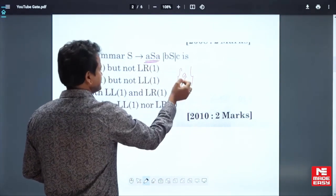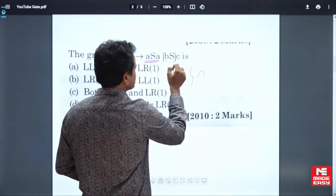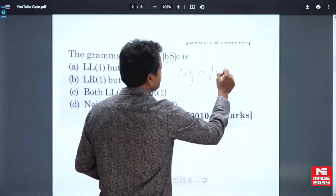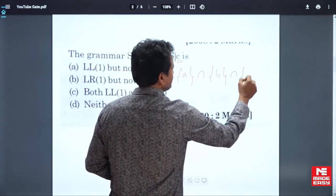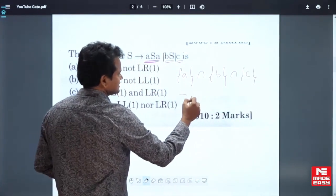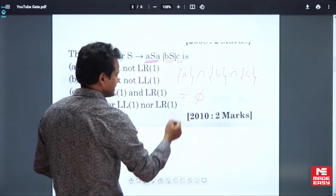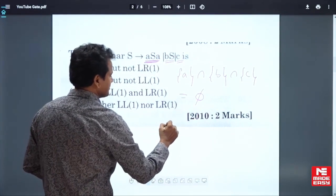What is the first of aSa? It is a. Go for first of bS. What is the first of bS? It is b, and go for the first of c. What is the first of c? It is c. And what is the intersection in these three? Intersection is nothing. So if nothing is in common, then the grammar is LL(1).